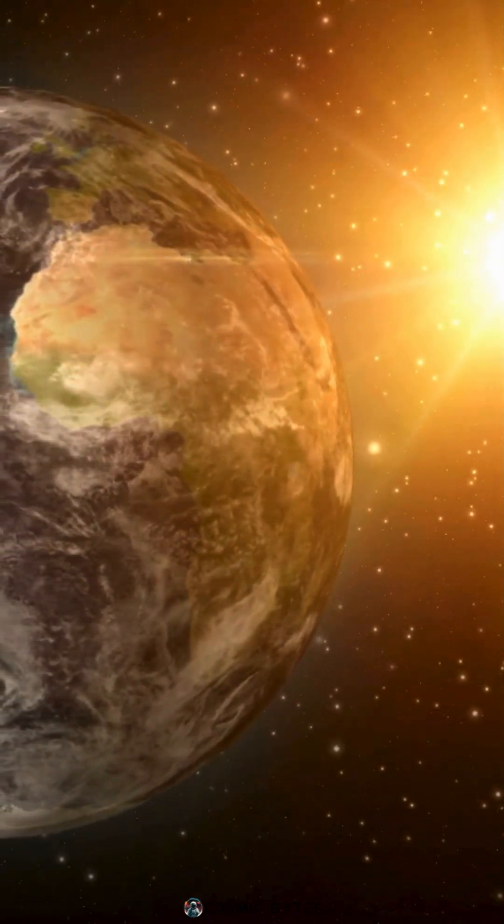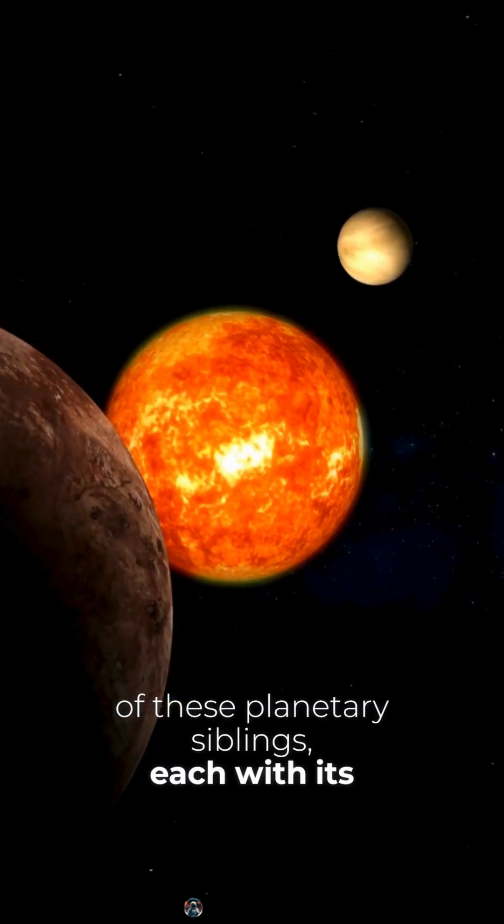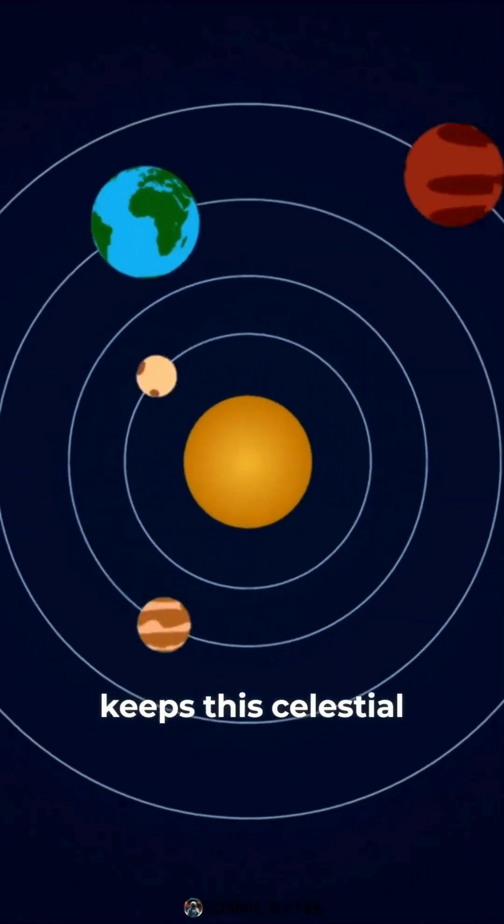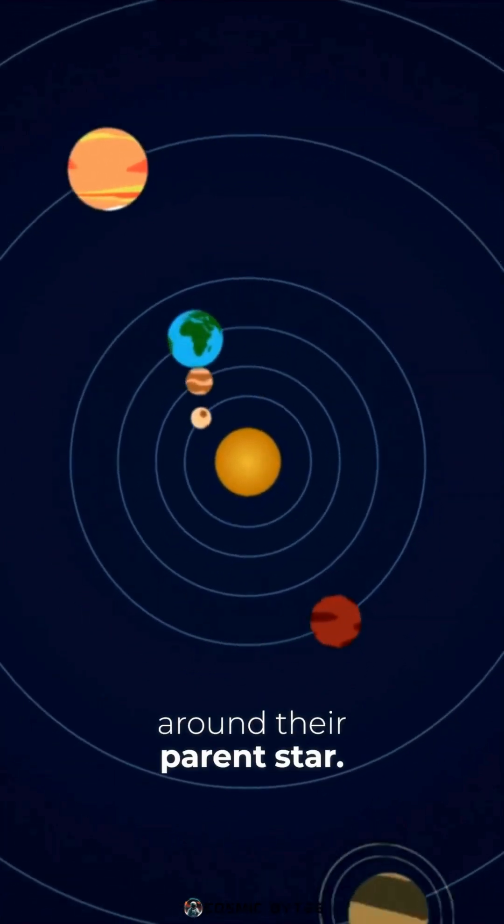As we explore the solar system, we discover the diverse landscapes of these planetary siblings, each with its unique characteristics and mysteries. The Sun's gravitational pull keeps this celestial family in check, ensuring they continue their cosmic dance around their parent star.